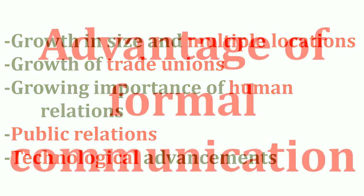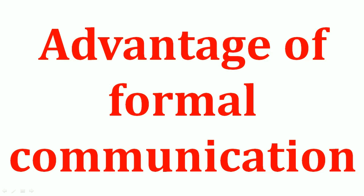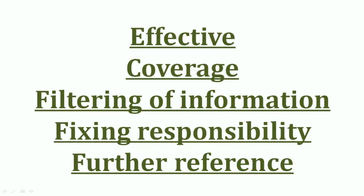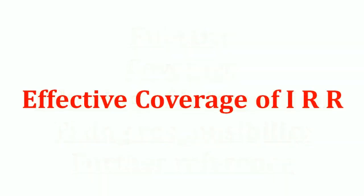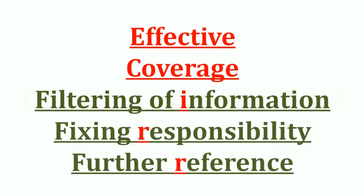The next question is advantages of formal communication. The headings are: effective, coverage, filtering of information, fixing responsibility, and for the references — five headings in total. The short trick is 'effective coverage of IRR.' I for information, R for responsibility, and R for references. So: effective, coverage, filtering of information, fixing responsibility, and further references.